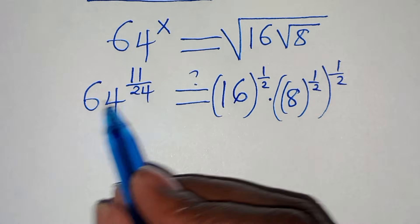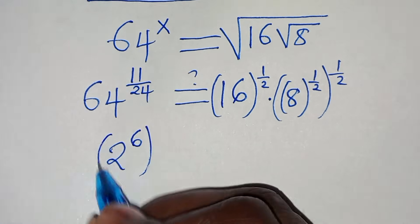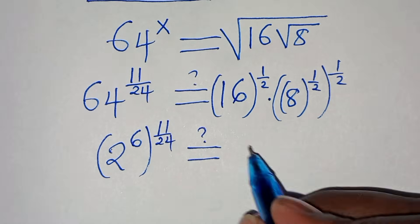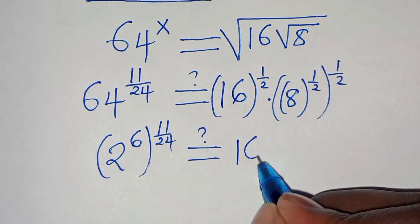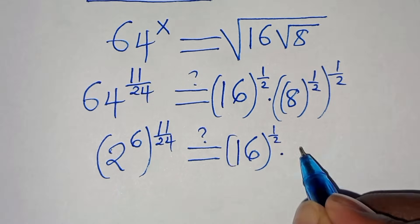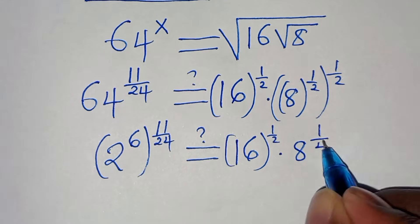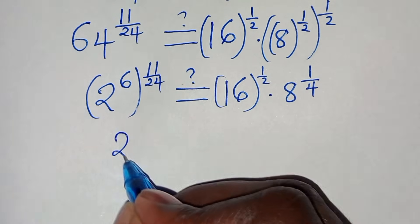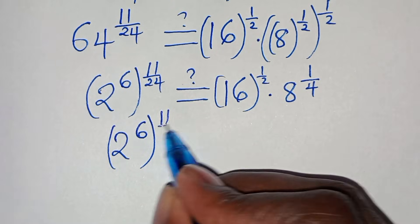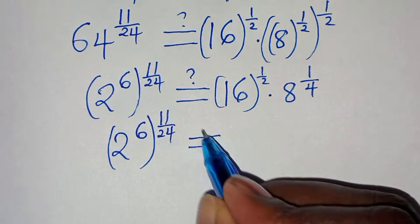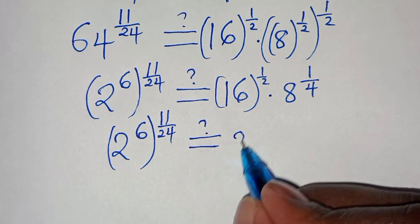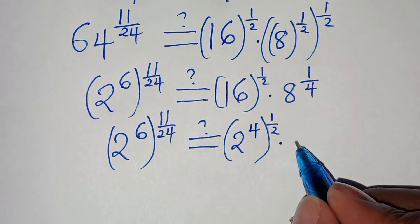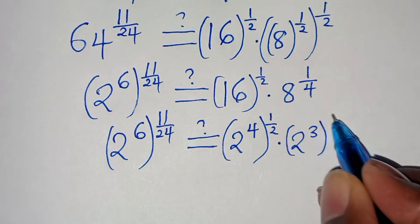So the left side is 2 to the power of 6 raised to the power of 11 over 24. For the right side, 16 to the power of a half becomes 2 to the power of 4 raised to the power of 1 over 2, and 8 to the power of 1 over 4 becomes 2 to the power of 3 raised to the power of 1 over 4. Using the property a to the power of n raised to the power of m equals a to the power of n times m.